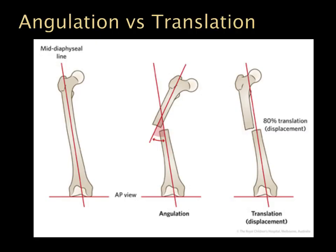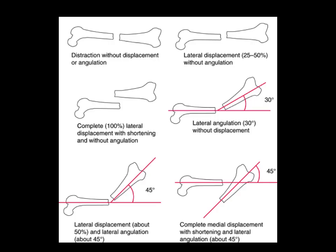In terms of terminology and describing actual alignment, we can talk about both angulation and translation. We always want to refer back to the longitudinal axis of whichever bone we're talking about. We can have angulation, and we can also have translation or displacement — how are the fracture fragments moving relative to the natural longitudinal axis? You can have a combination of all of these: distraction, lateral displacement with or without angulation, foreshortening and overlap. We use these terms so that we can describe it to our colleagues, including our orthopedists.